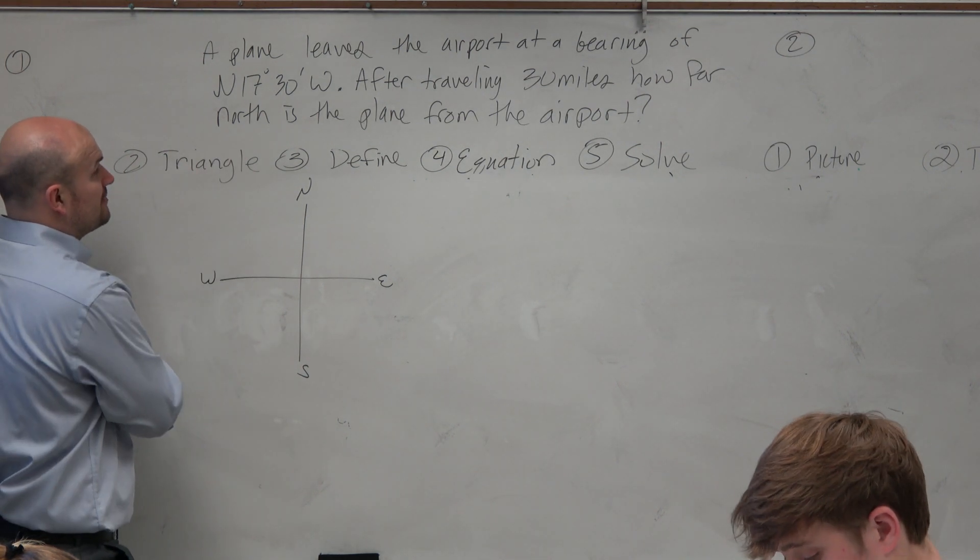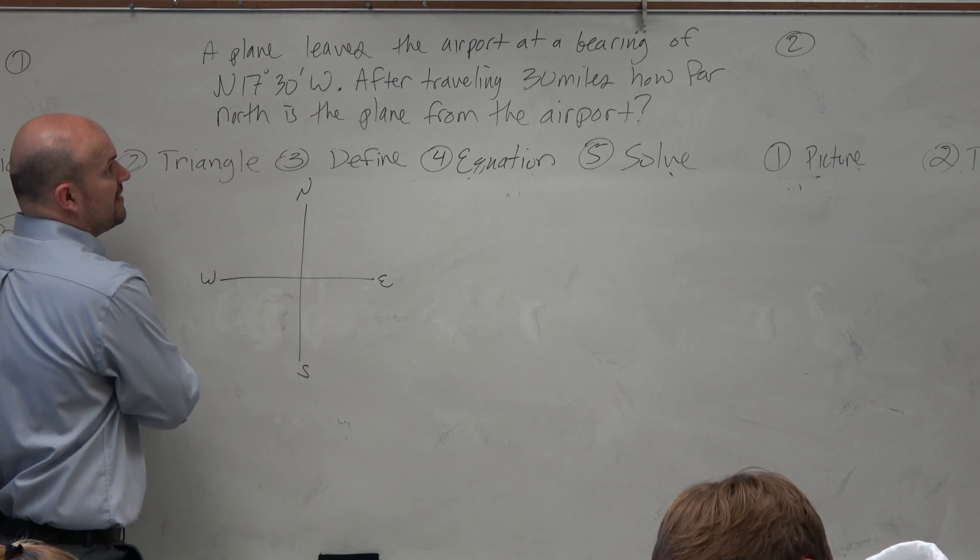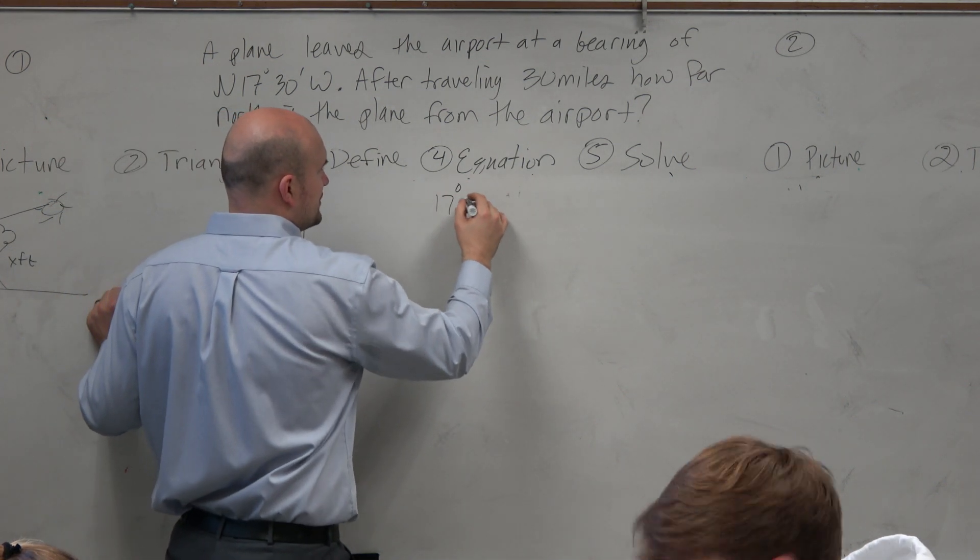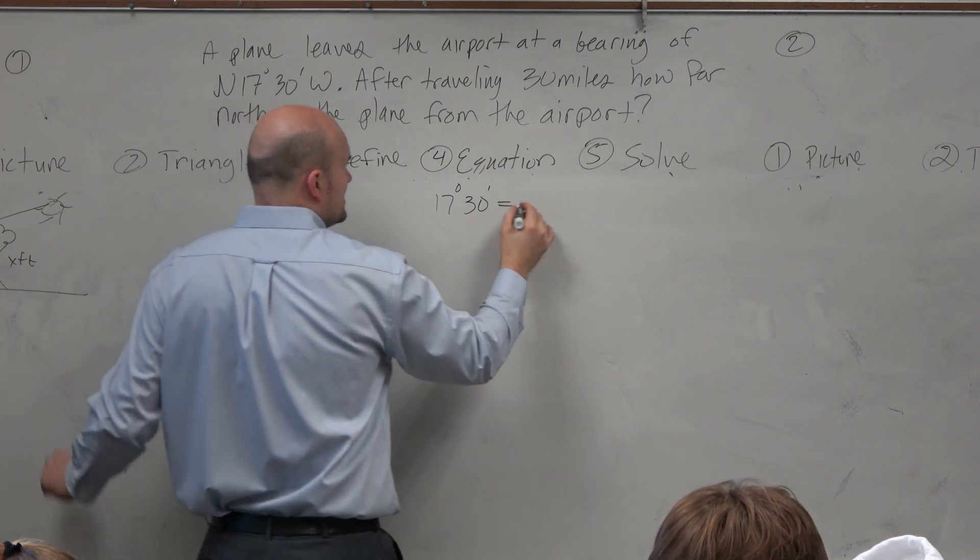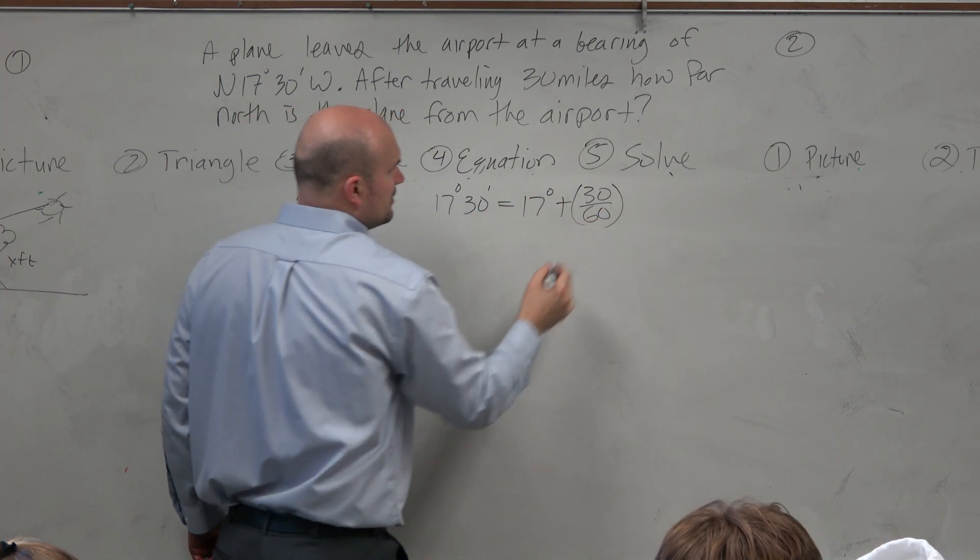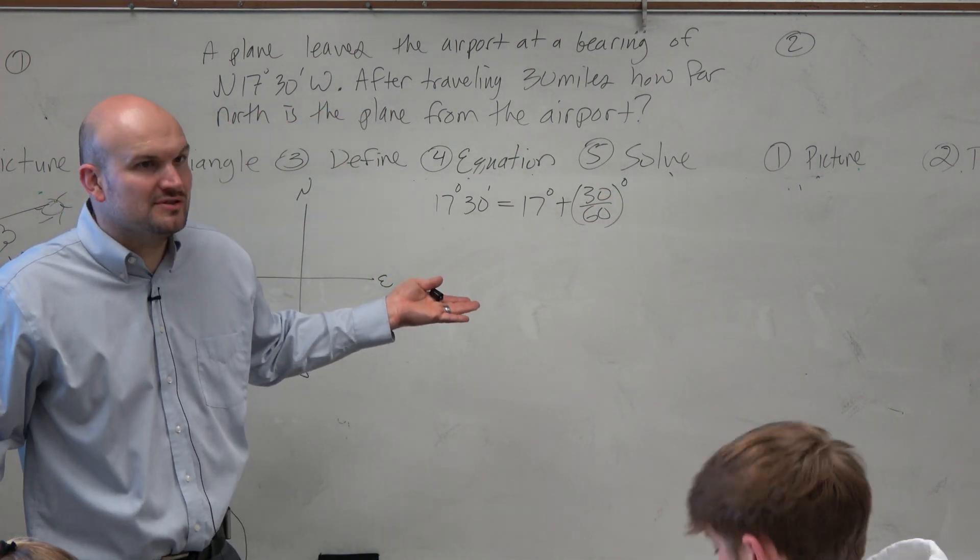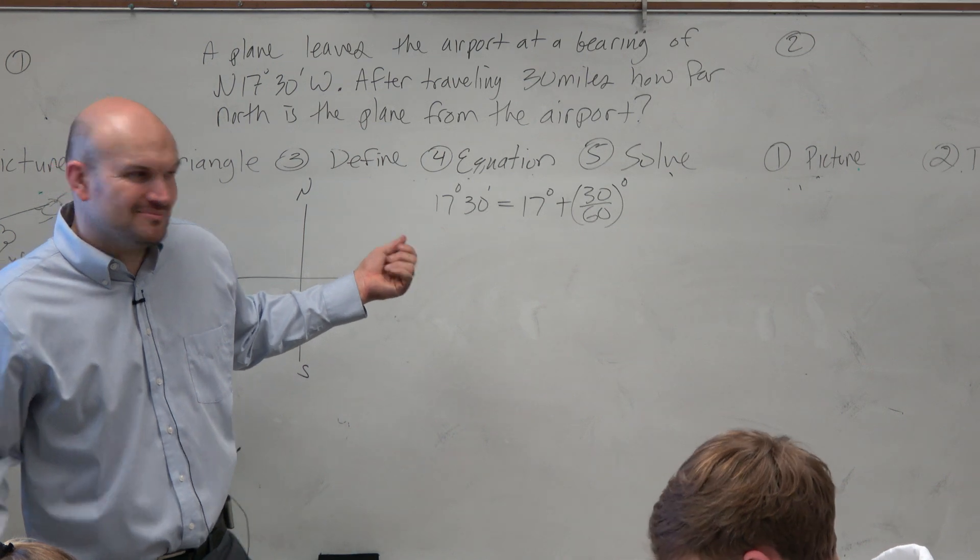So the plane is flying at north 17 degrees, and then 30 minutes. Now, again, we can recalculate this. 17 degrees 30 minutes is 17 degrees plus 30 out of 60 minutes. Well, guys, 30 out of 60 is what? 1 half, which to reduce to a decimal is 0.5. So this one, I don't even need my calculator.